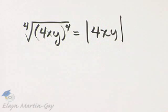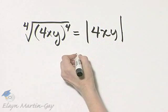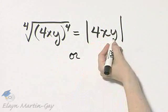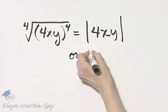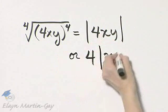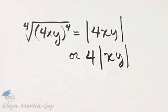or it is true that the absolute value of a product is the product of the absolute values. So I can write this as the absolute value of 4 times the absolute value of xy. And of course, the absolute value of 4 is 4. So that would be the absolute value of 4 absolute value of the product xy.